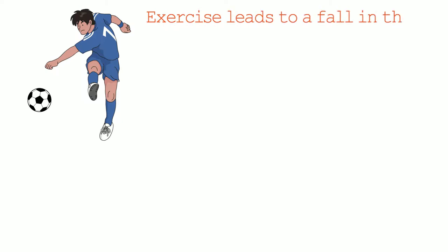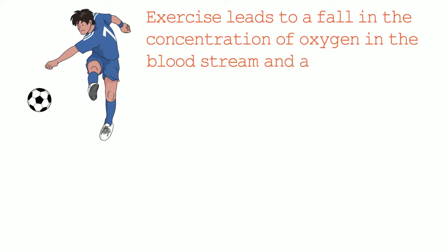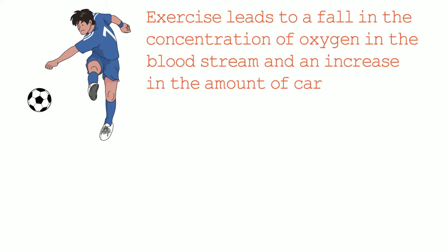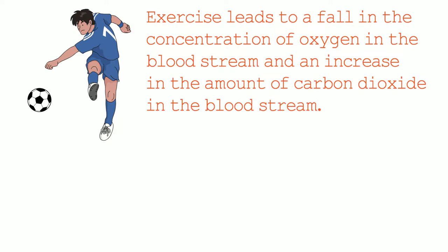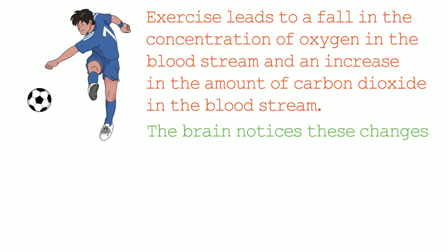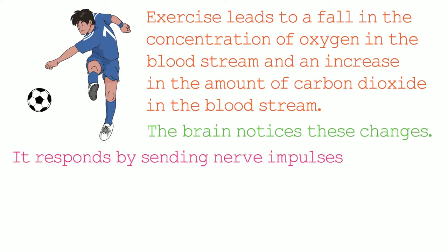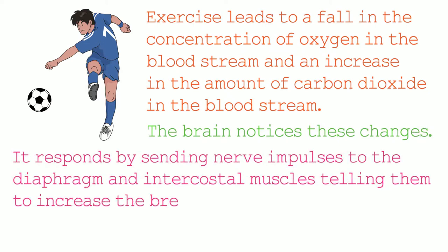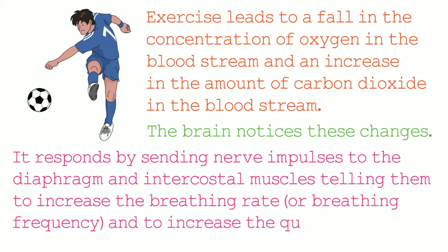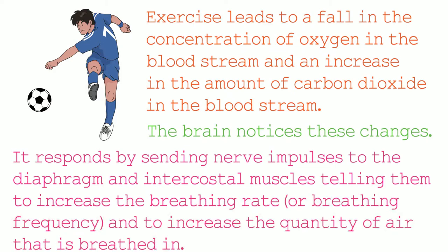Exercising causes the concentration of oxygen in the bloodstream to fall and the concentration of carbon dioxide to rise. The brain notices these changes and responds by sending nerve impulses to the diaphragm and intercostal muscles, telling them to increase the breathing rate and the quantity of air breathed in. This results in the concentration of oxygen and carbon dioxide in the bloodstream changing.